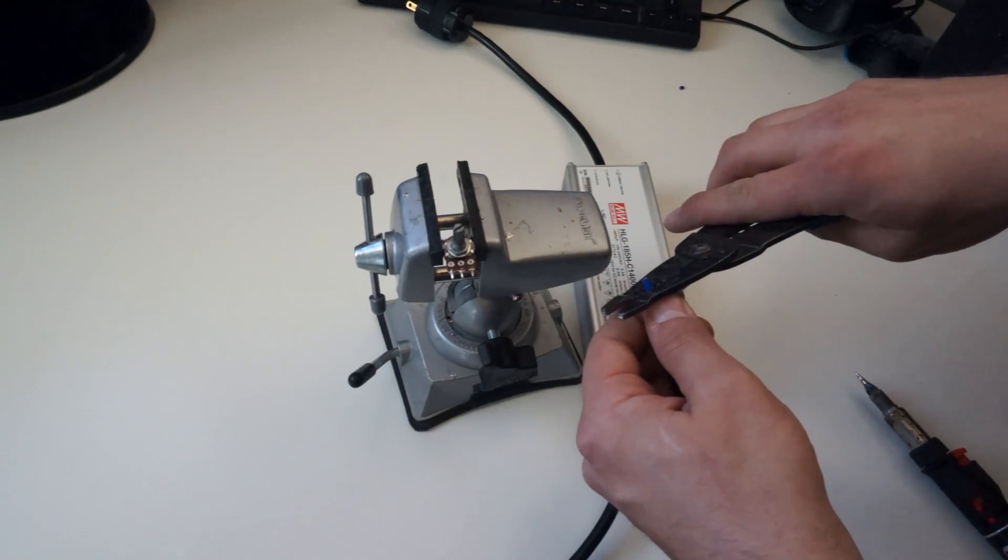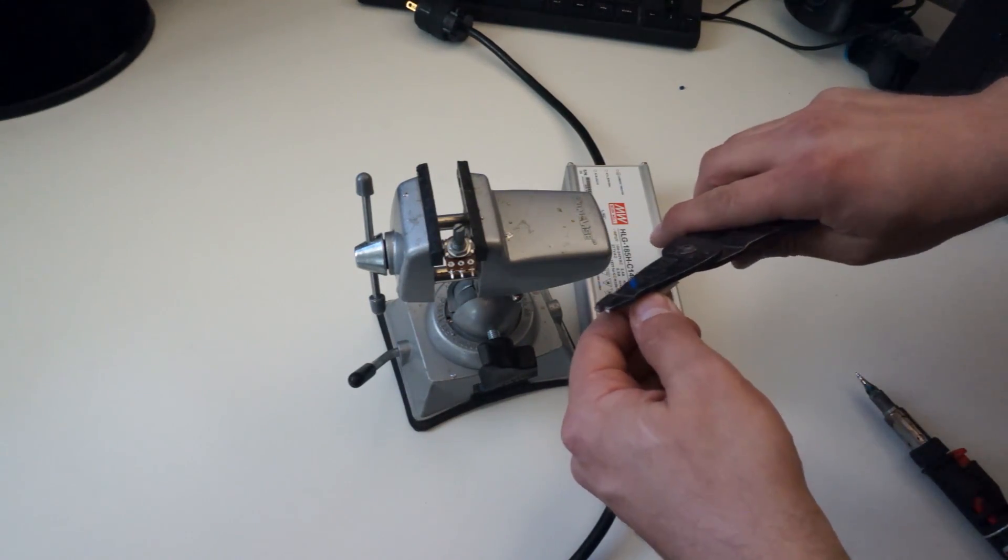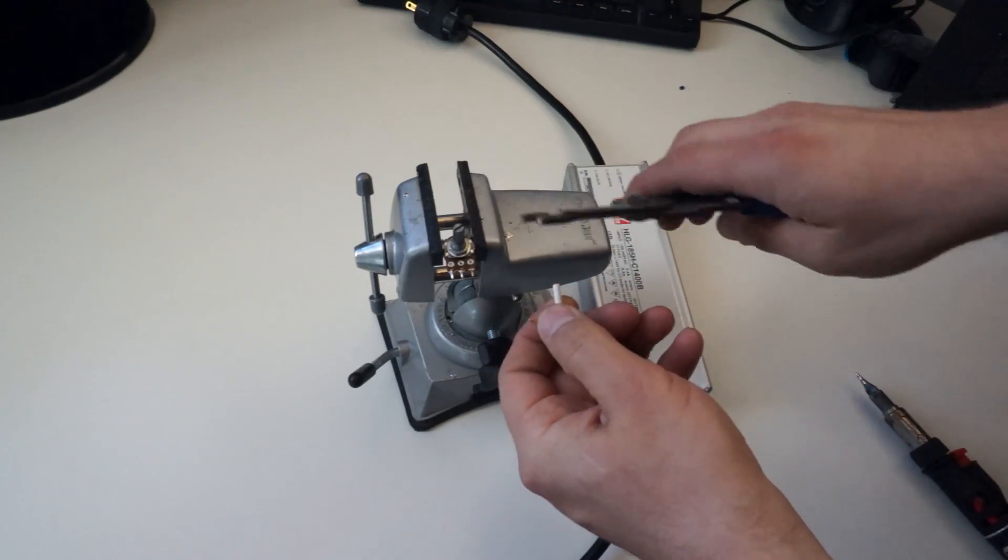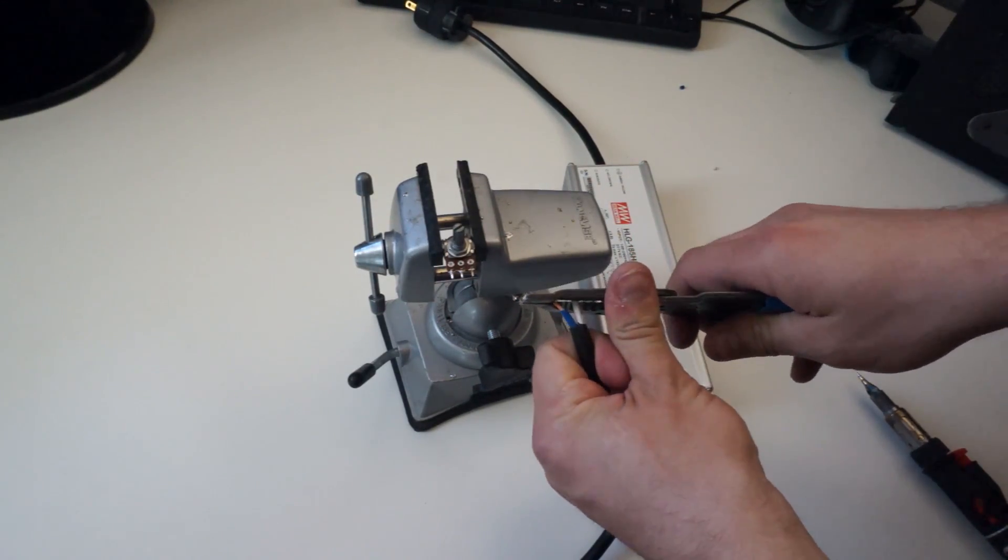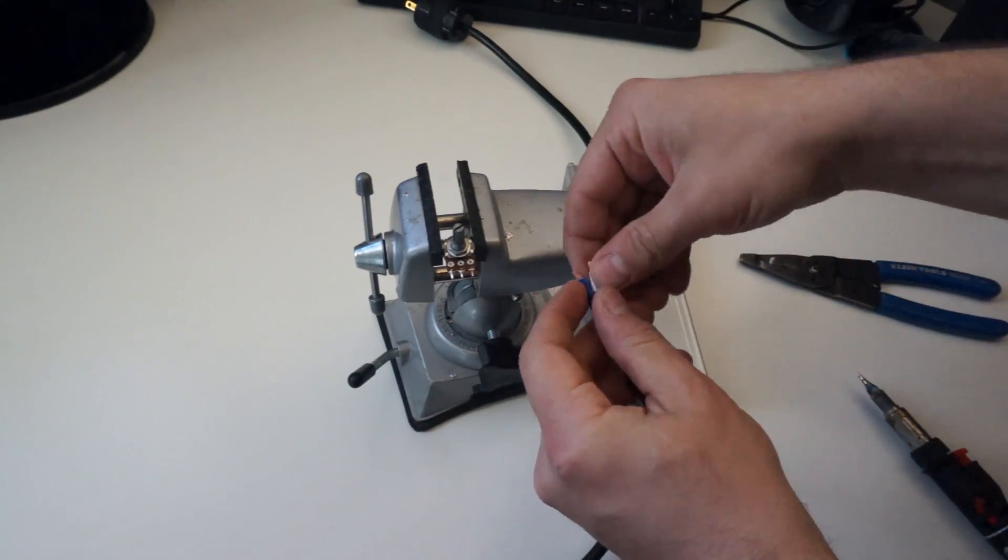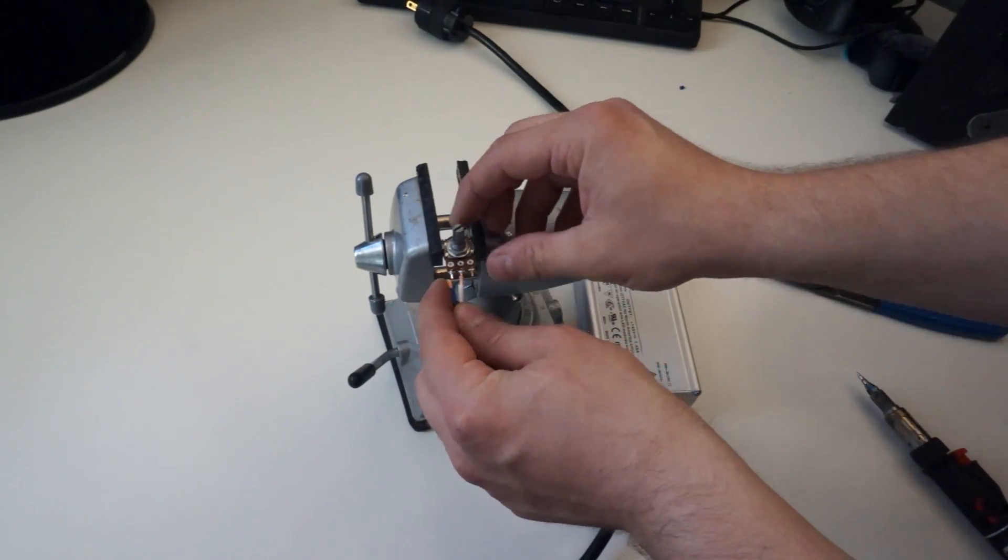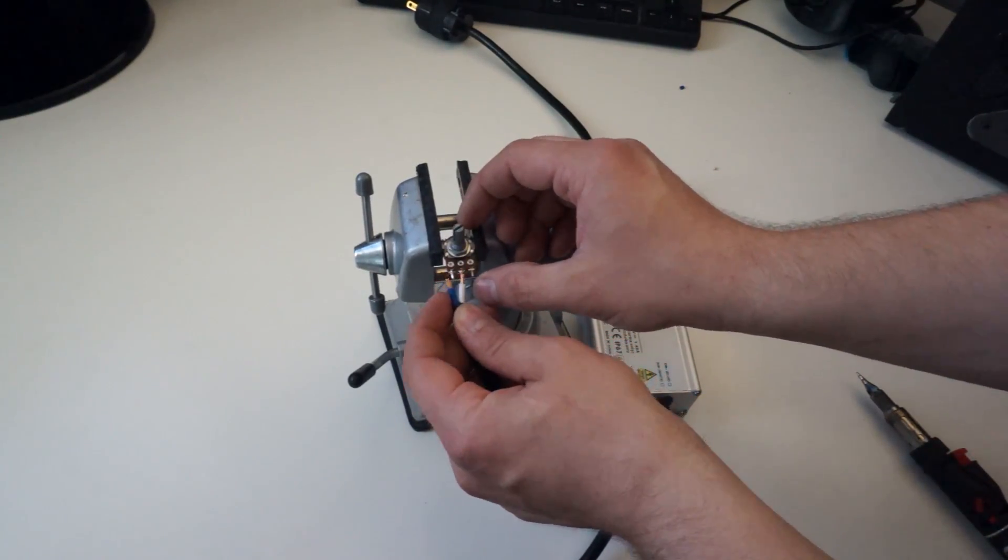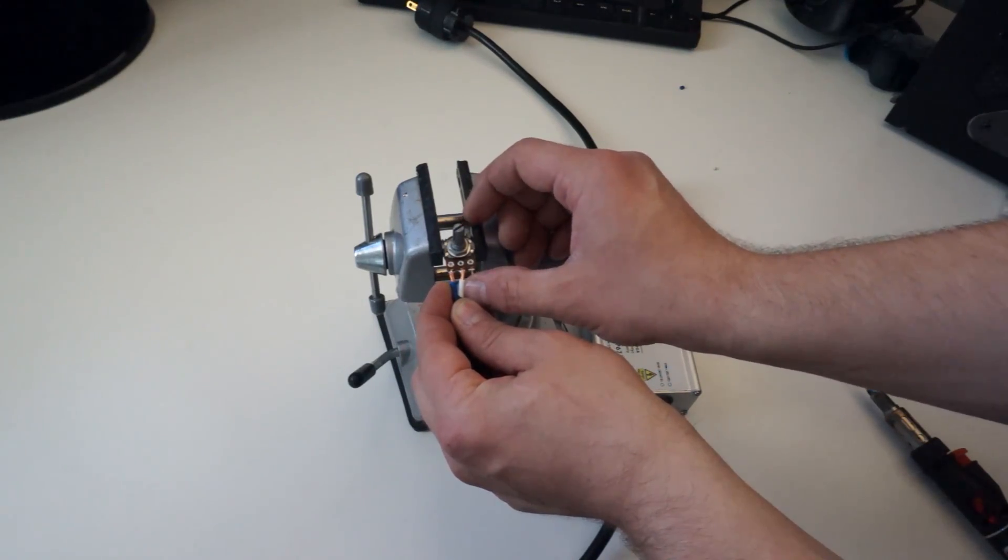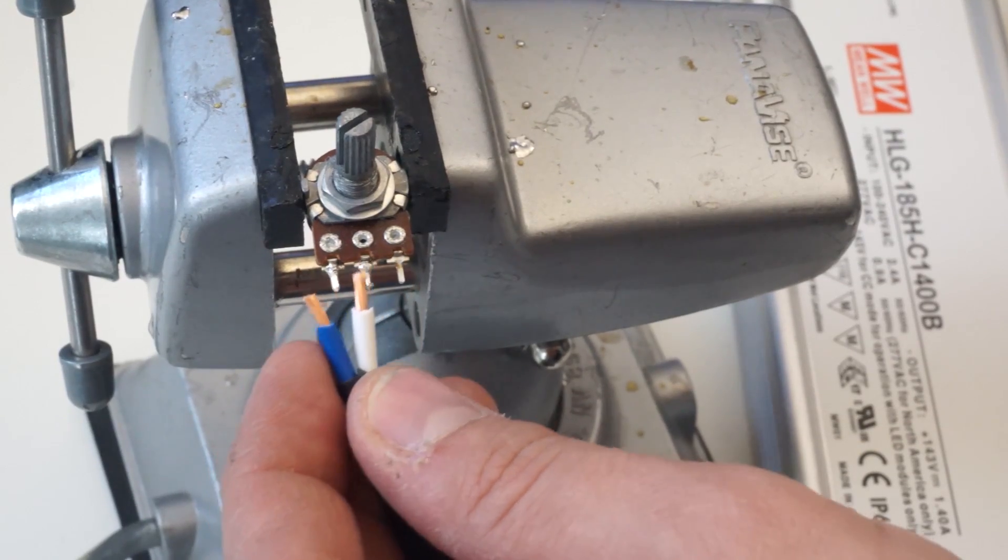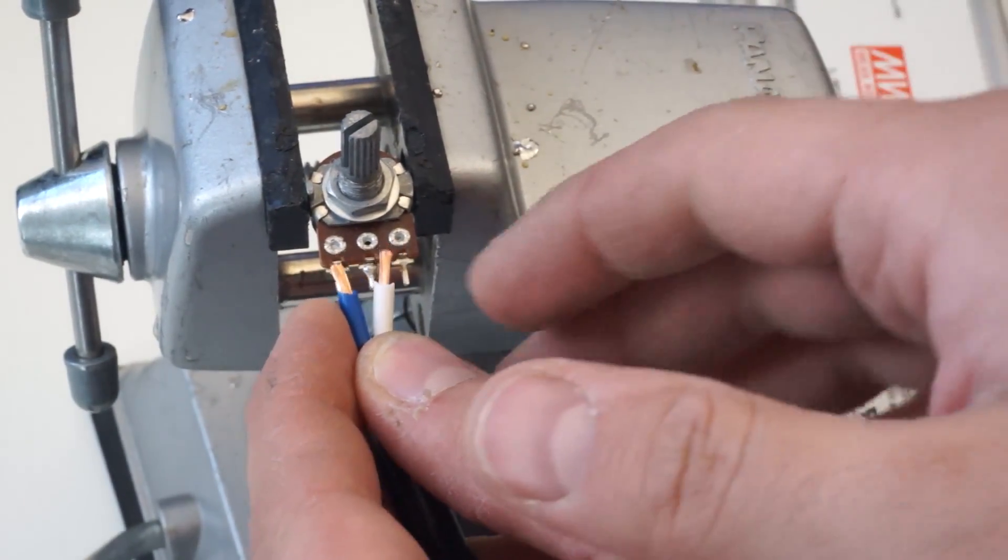When you strip the cable, make sure you strip just enough. Ideally the stripped cable should be just about as long as the pin on the potentiometer. If it's too short you don't get very good contact and you could burn the jacket with solder. If it's too long it can be unruly and there's a better chance of a short happening. Just get them about the same length as the terminal and you're in really good shape.